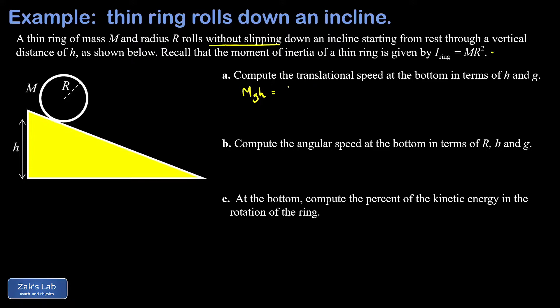That consists of two components. There's the translational component, that's one half m times the speed of the center of mass squared, and there's the rotational component and that's one half I omega squared. Next we can plug in the moment of inertia for the ring.